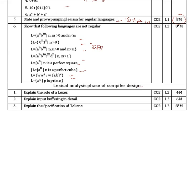In compiler design, for the lexical analysis phase: explain the role of the lexer — you have to draw a diagram and explain, worth 4 to 7 marks. Also explain input buffering, which is another very important question. Finally, explain the specification of tokens. This covers the second module in compiler design.